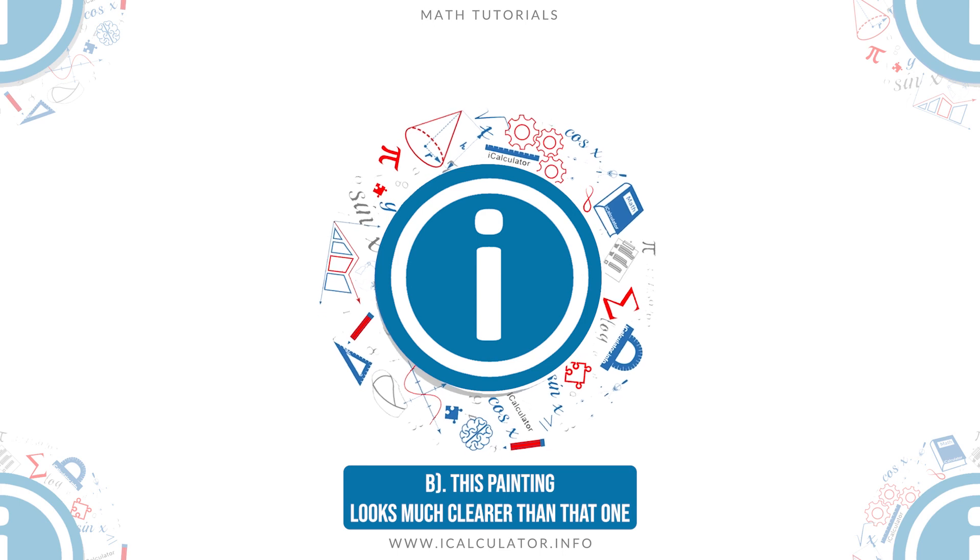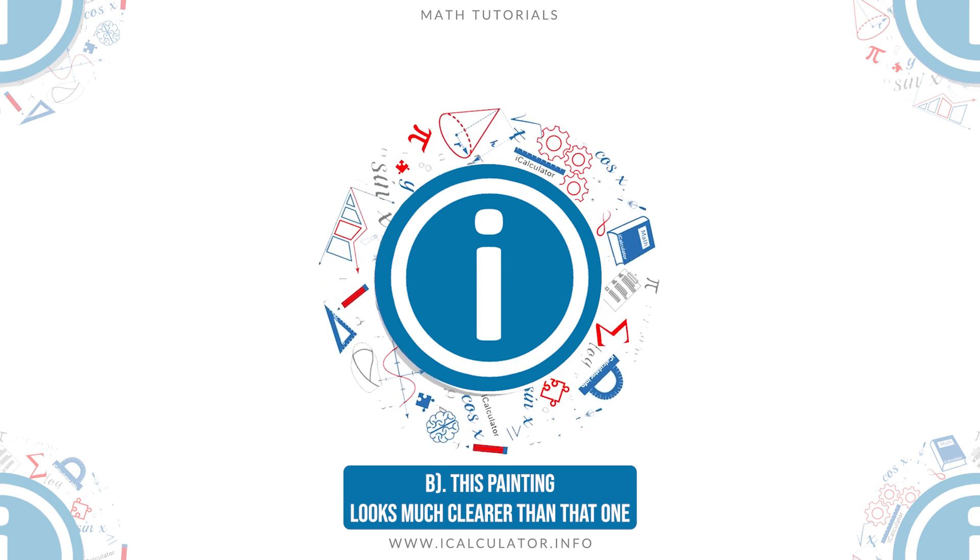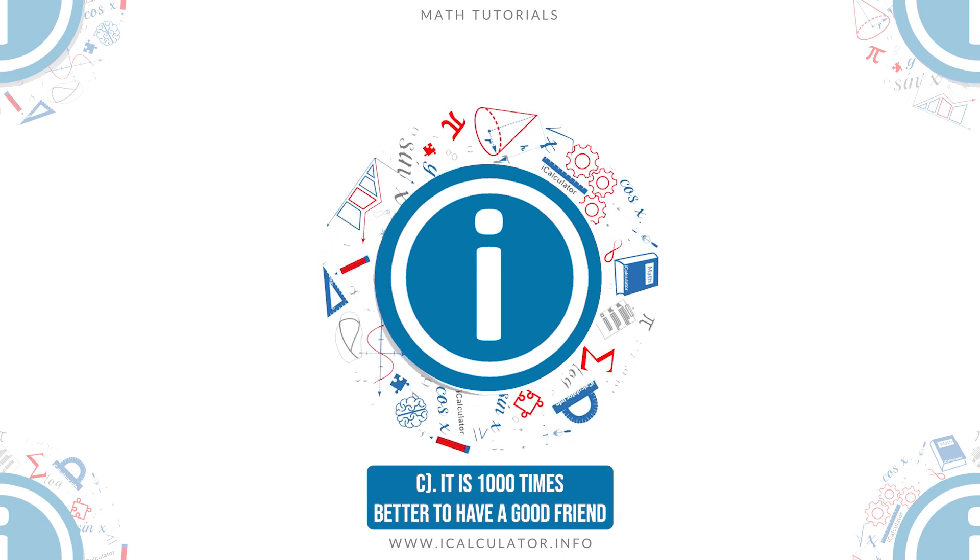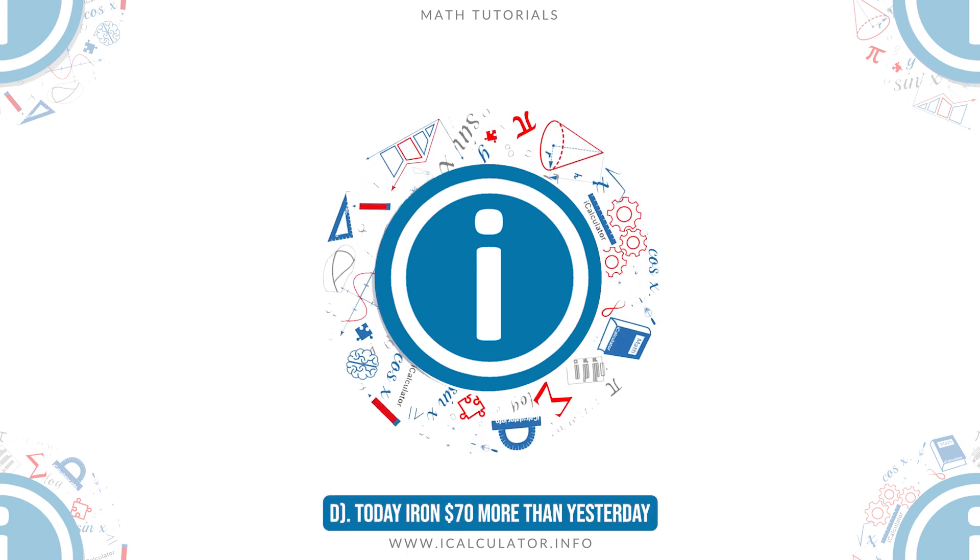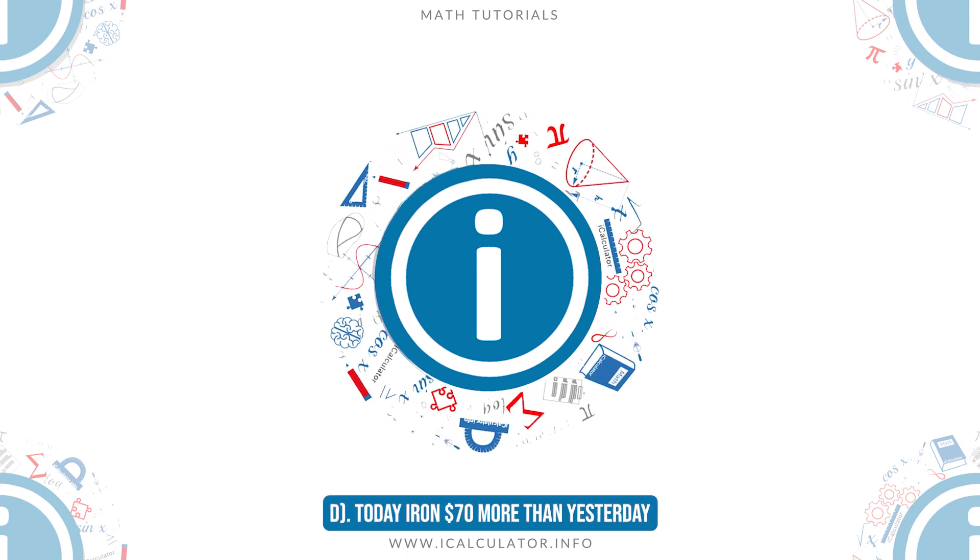B: This painting looks much clearer than that one. C: It is 1000 times better to have a good friend than $1 million in the account. D: Today I earned $70 more than yesterday.